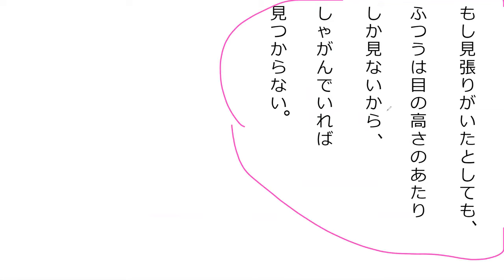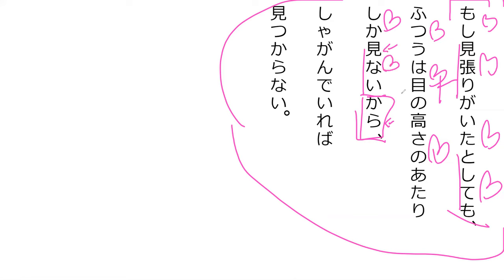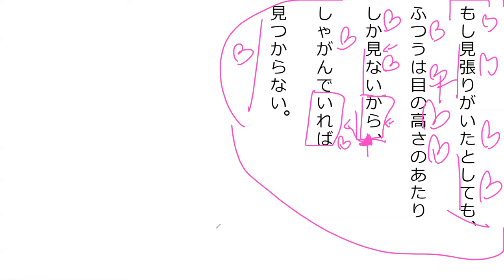Let's go through the full sentence from the top. Even if there are guards — mihari ga ita toshitemo — futsu, typically, they would be looking at the level of their eyes, and shika meaning 'only.' So except for eye level, they would not see — the only things they see are at eye level. Then kara, and shagandeireba — if I crouch — mitsukaranai — I will not be found. Perfect.